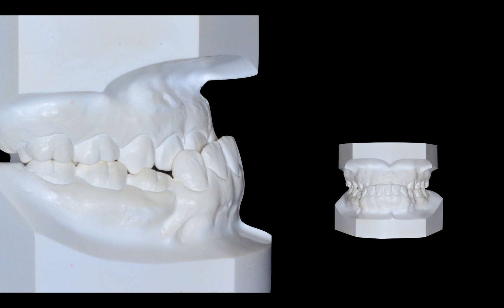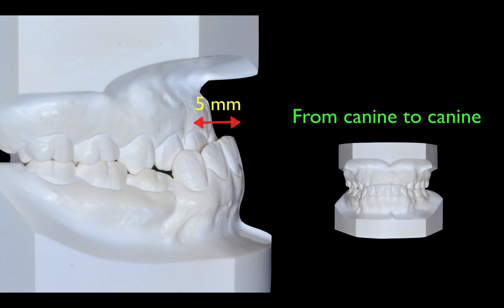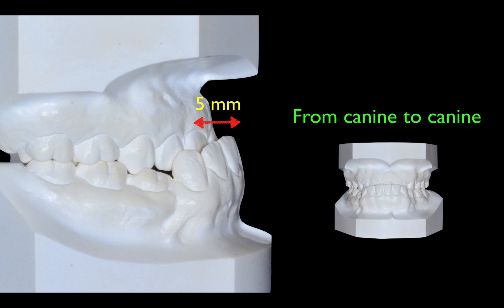Let's see the patient's study model. The distance of the negative overjet was five millimeters, and the anterior crossbite was noted from canine to canine. We normally put a very long and wide anterior bite interval to remove the occlusal interference; however, it's impractical. So we put posterior bite intervals instead.